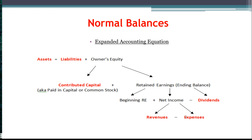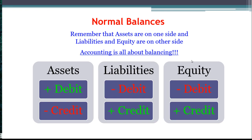The reason we do this is that we need our six core accounts: assets, liabilities, capital, revenues, expenses, and dividends. Once we've identified those, we can look at the normal balance rules.